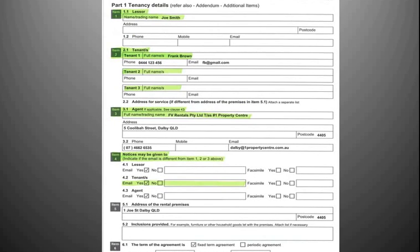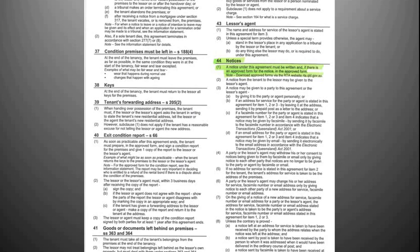Item 4 requests your consent for notices to be issued via email. Let's discuss the meaning of notices as per the terms in the contract. Standard Term 44 of the contract on page 7 sets out the meaning of notices with further explanations. Subsection 1 states: a notice under this agreement must be written, and if there is an approved form for the notice, it must be in the approved form. All communication and notices throughout this agreement must be in writing.